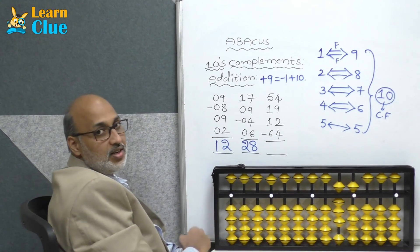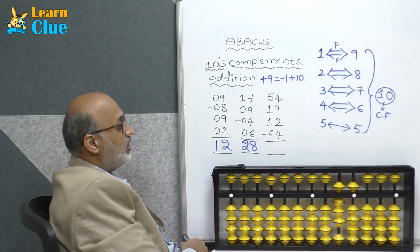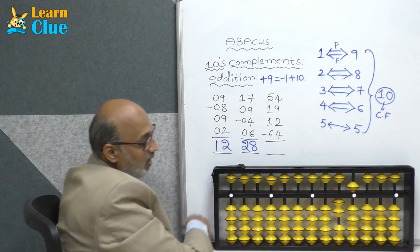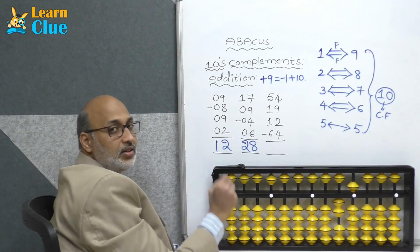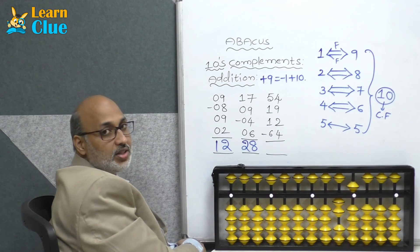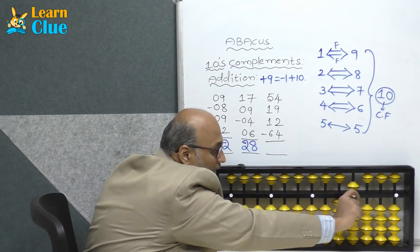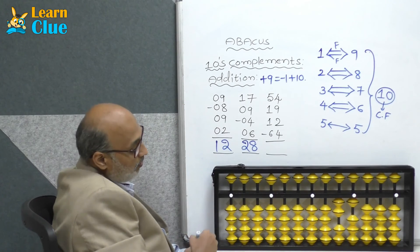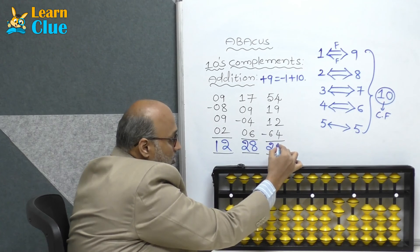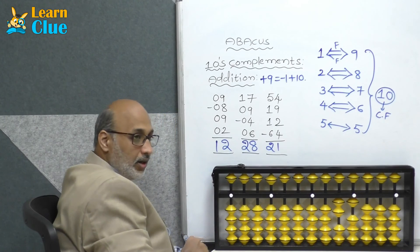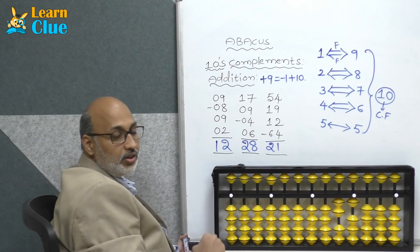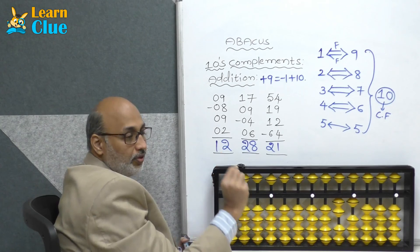Now they are asking minus 64 — minus 60 minus 4. Again think in 5s complements: minus 4 is nothing but plus 1 minus 5. What is the answer? Answer is 21.